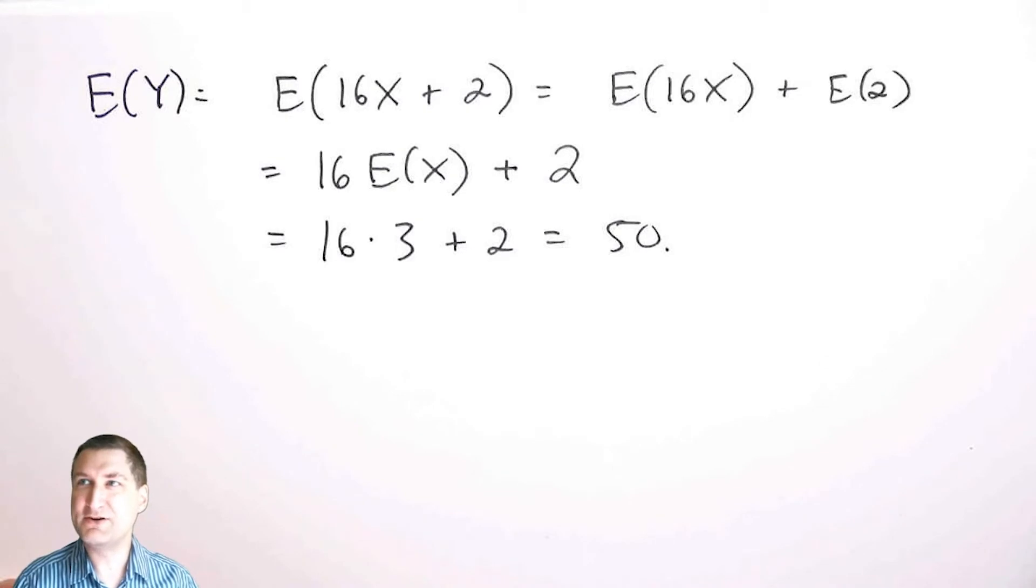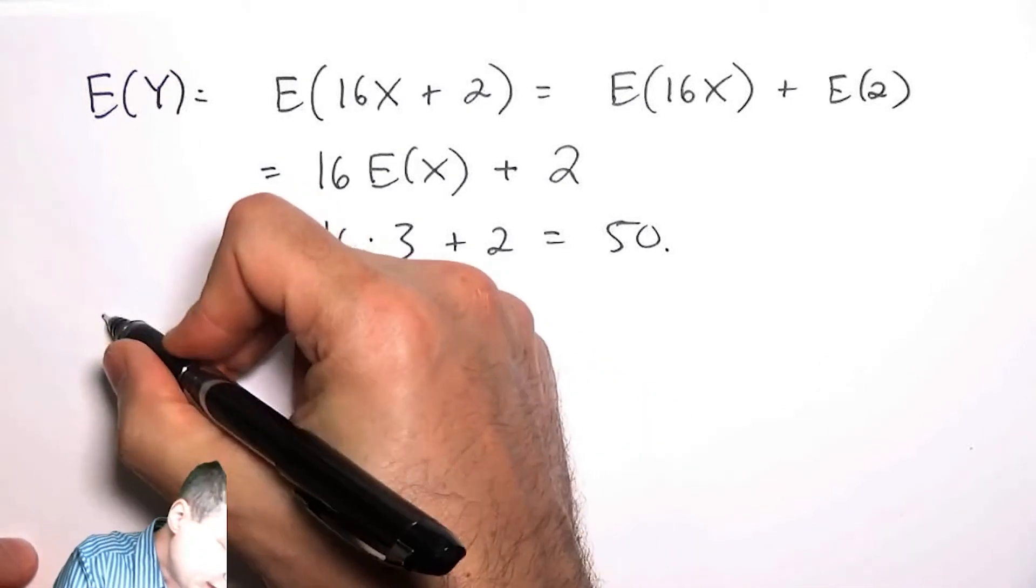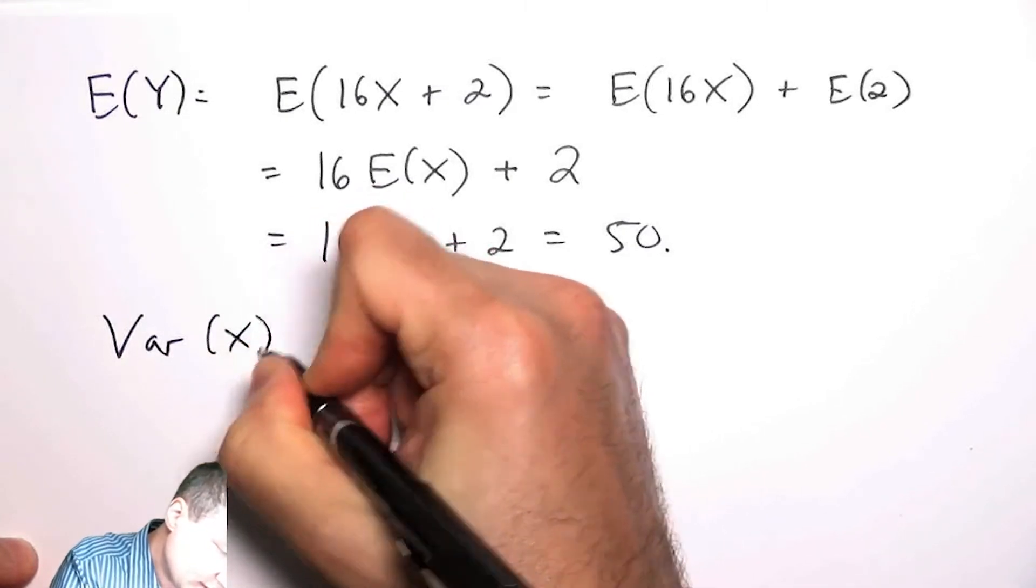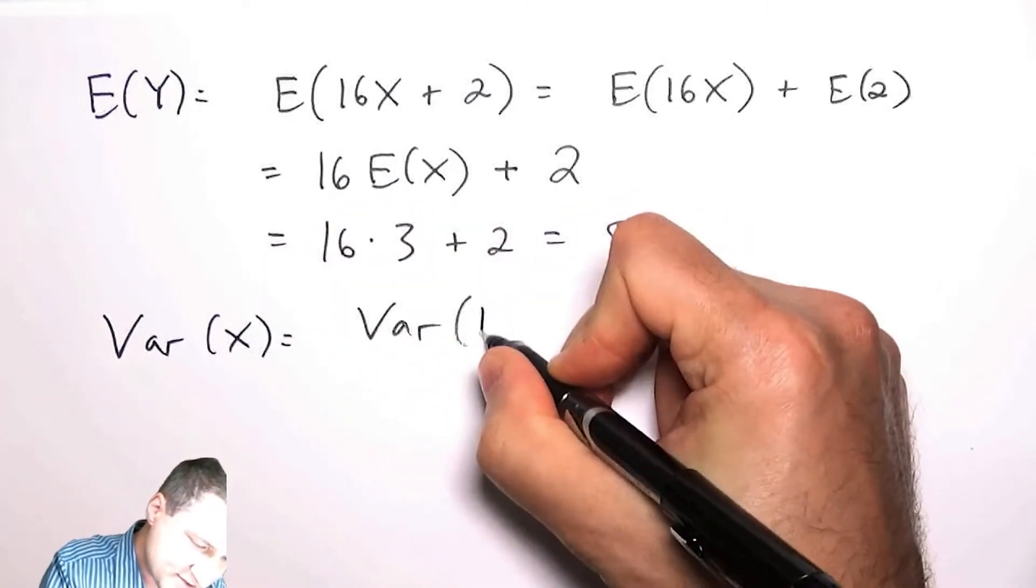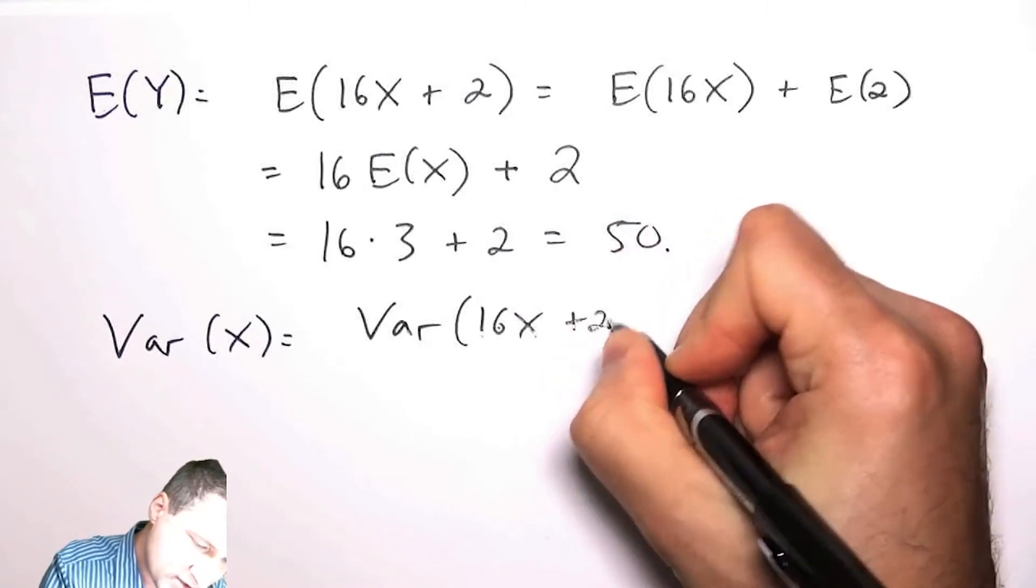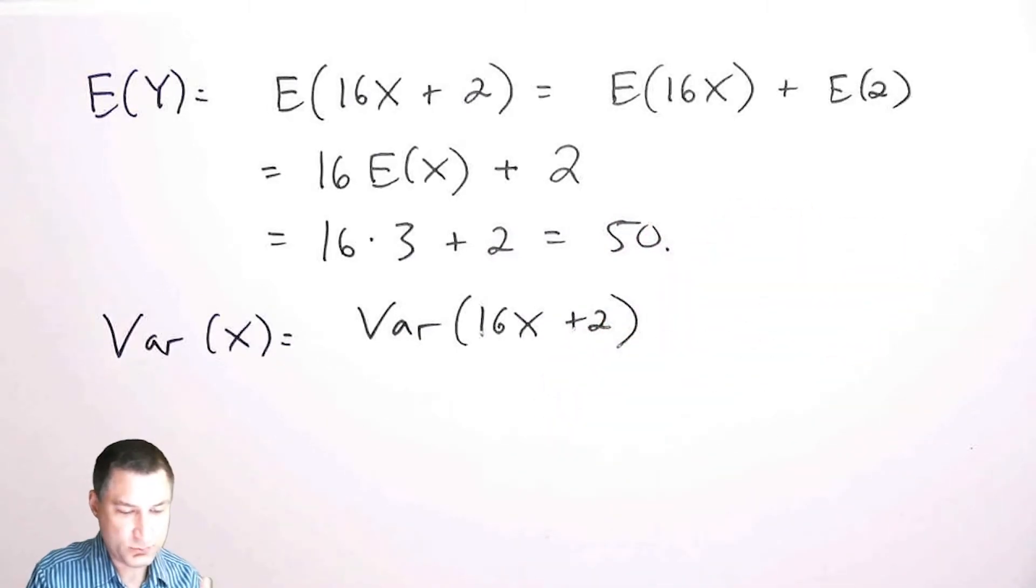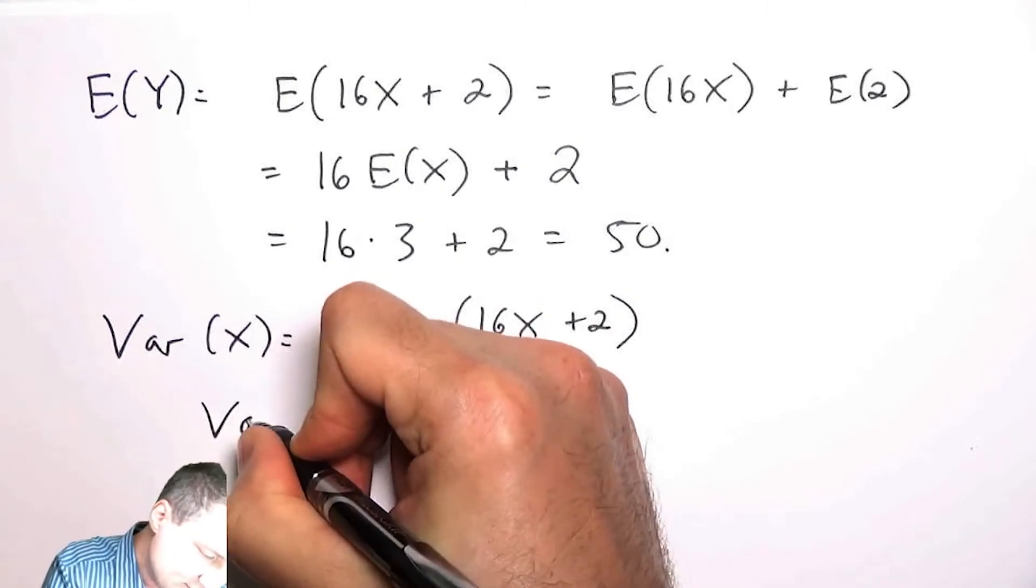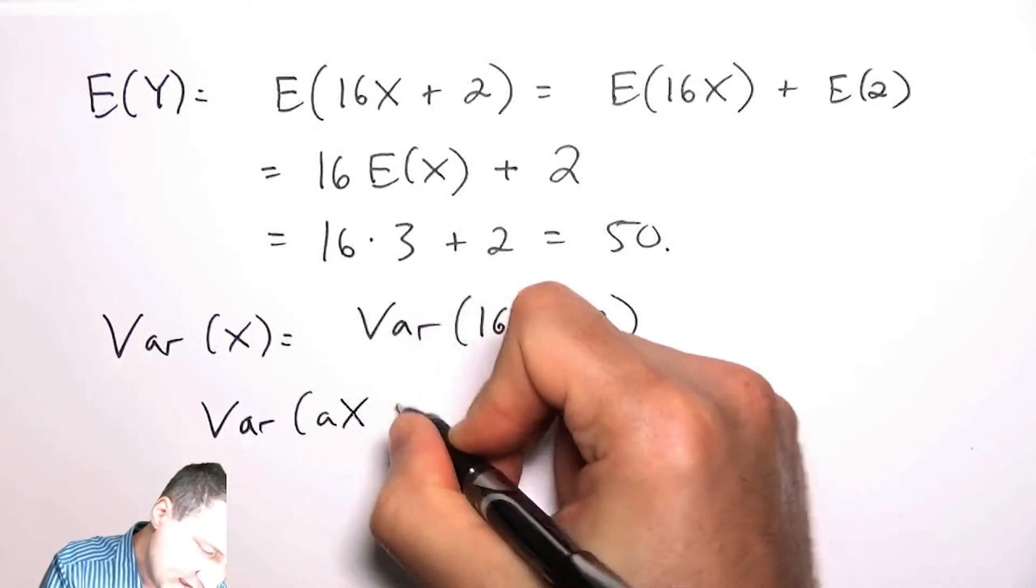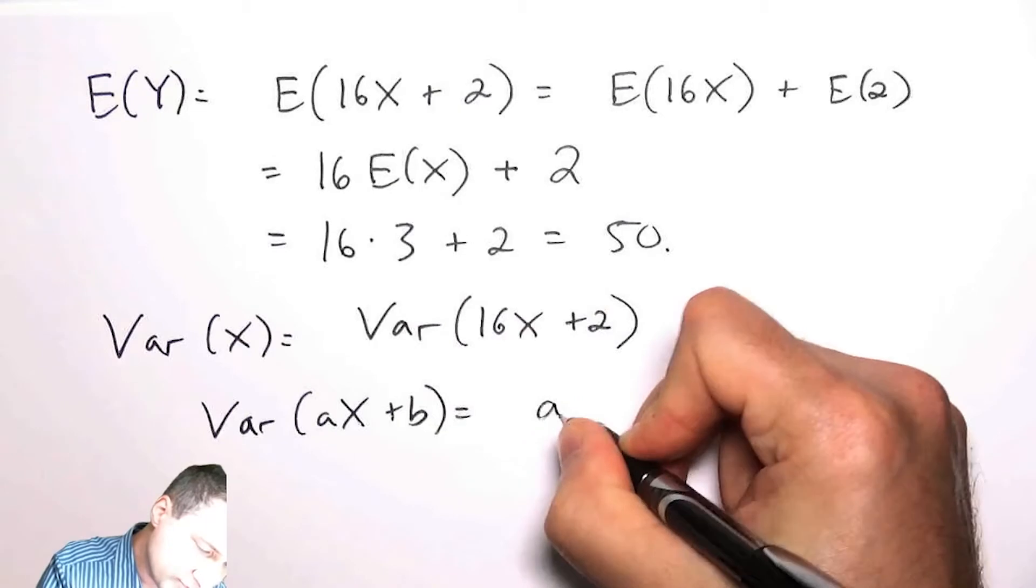Now what is the variance of Y? The variance of Y is the variance of 16X plus 2. One thing that we know about the variance is that the variance of aX plus b is equal to a squared times the variance of X.